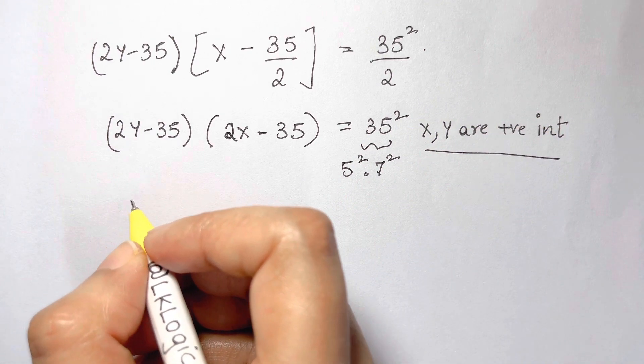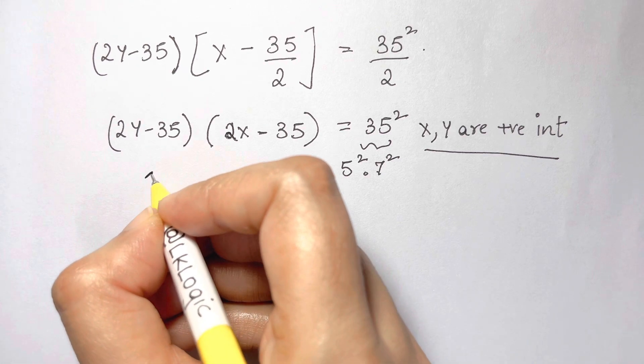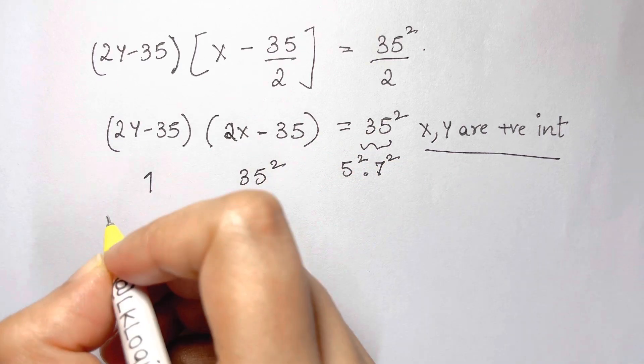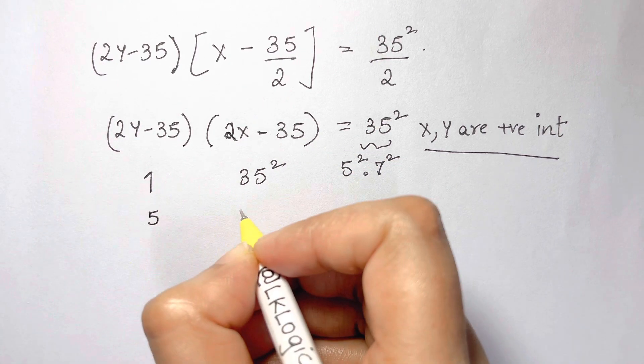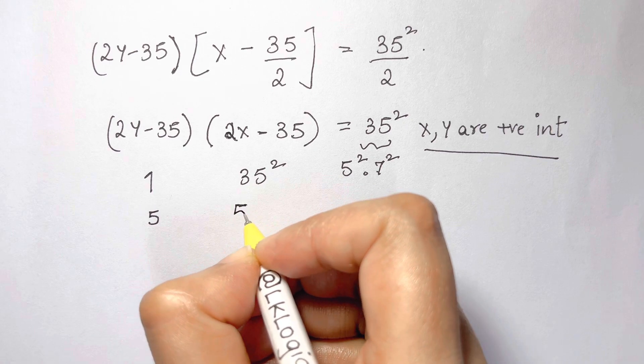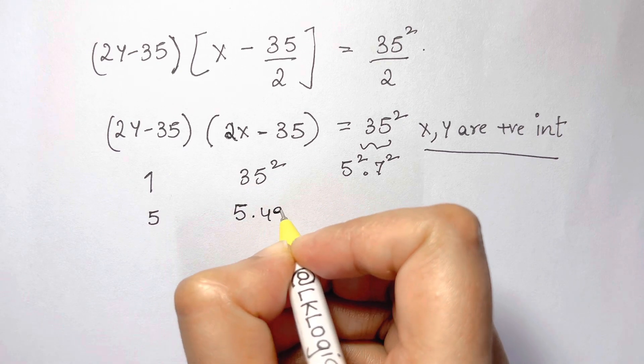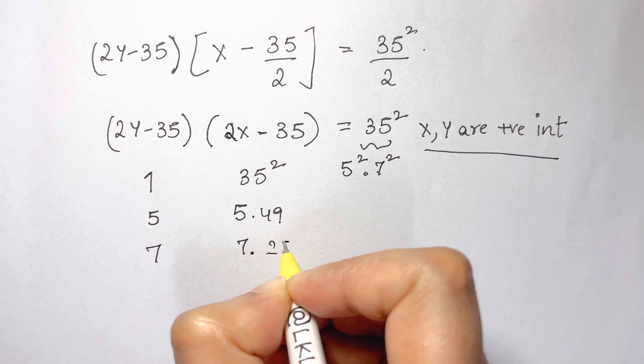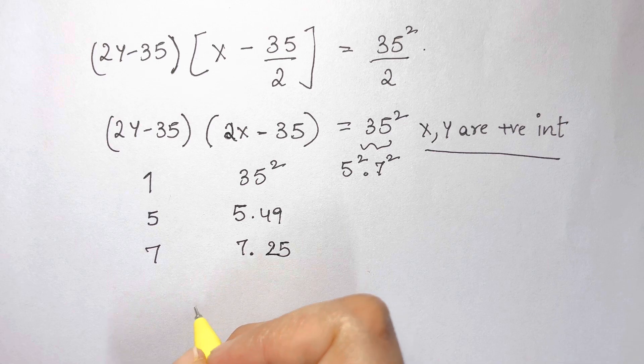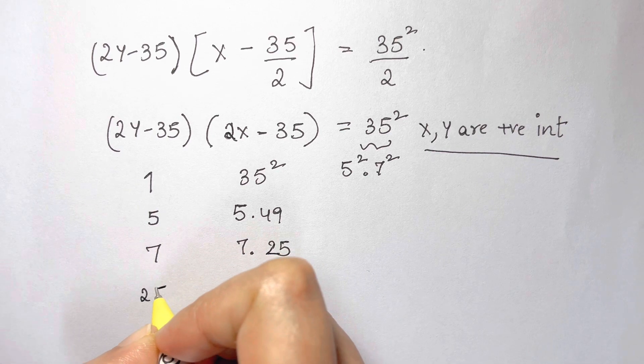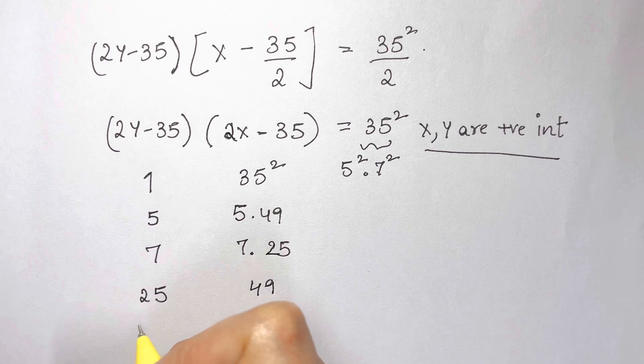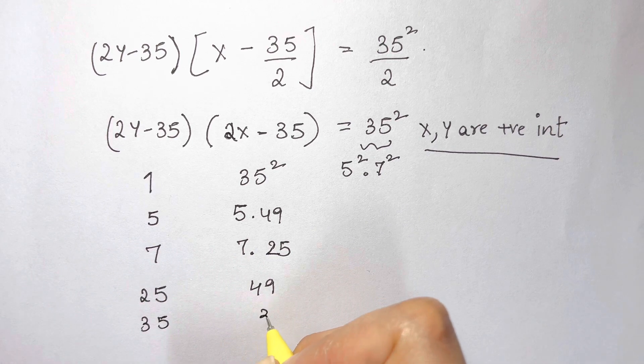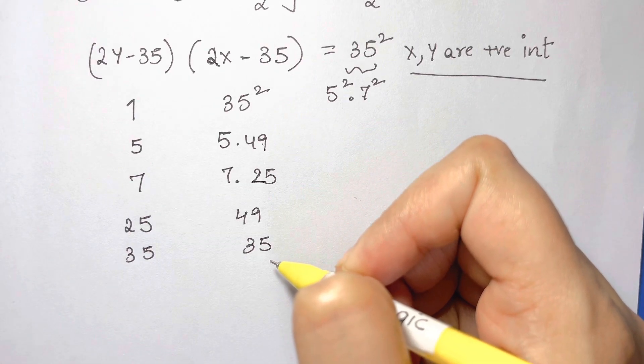Now, what are the factors? You can have 1 and 35 squared or 35 squared and 1. Then you have 5 and 5 times 49. And you have 7, 7 times 25. Then you can have 25 and 49. Also, you can have 35 and 35. These are the 5 possible values.